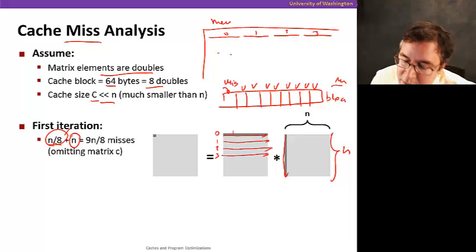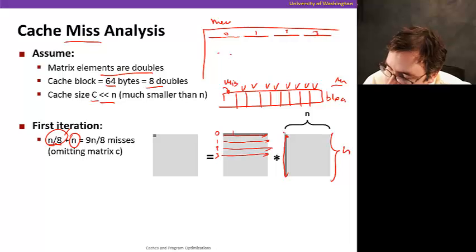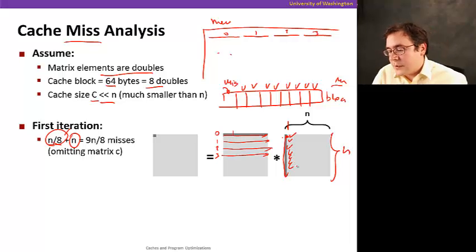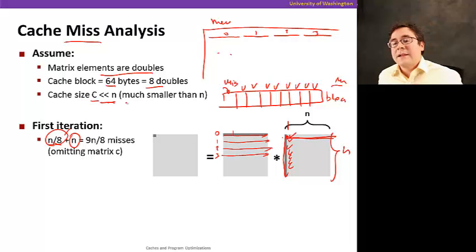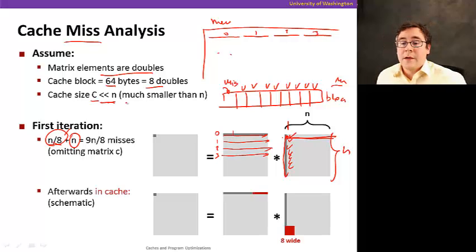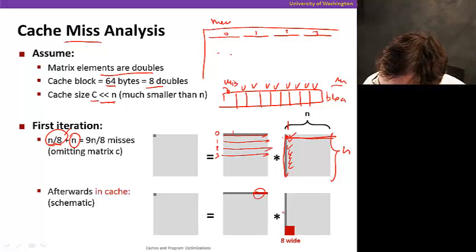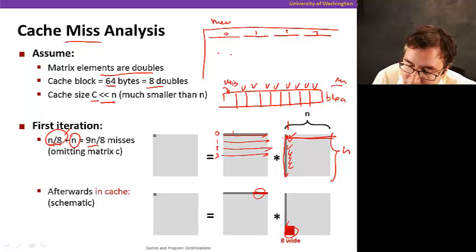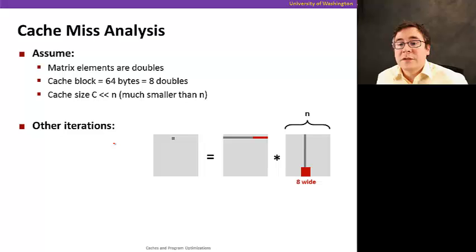For each element in the column of B, we're going to have a cache miss because each row of the column is in a different cache block. Since the cache is much smaller than n, definitely a block is much smaller than n. So when we access this column, every single element is a miss, giving us n misses for the column. In total for the first iteration we have 9n over 8 misses.